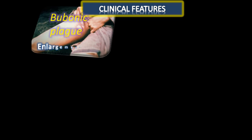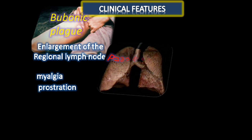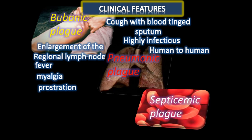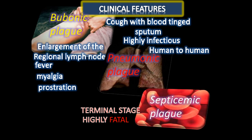Clinical features: In bubonic plague, there is enlargement of regional lymph nodes which become painful and tender, accompanied by high fever, myalgia, and prostration. In pneumonic plague, there is cough with blood-tinged sputum; it is highly infectious and human-to-human spread is possible. Septicemic plague is the terminal stage, highly fatal due to endotoxin.